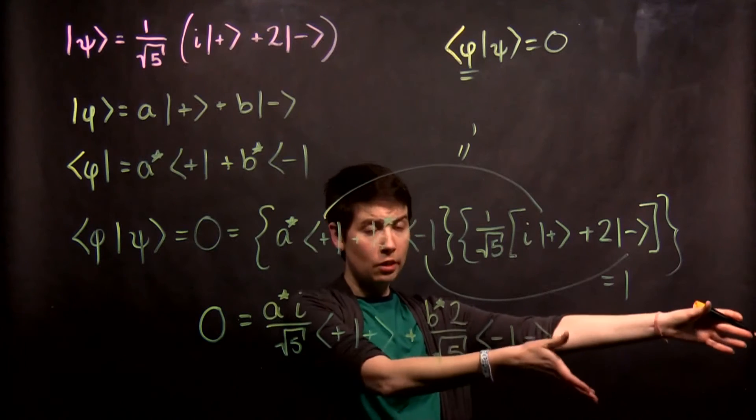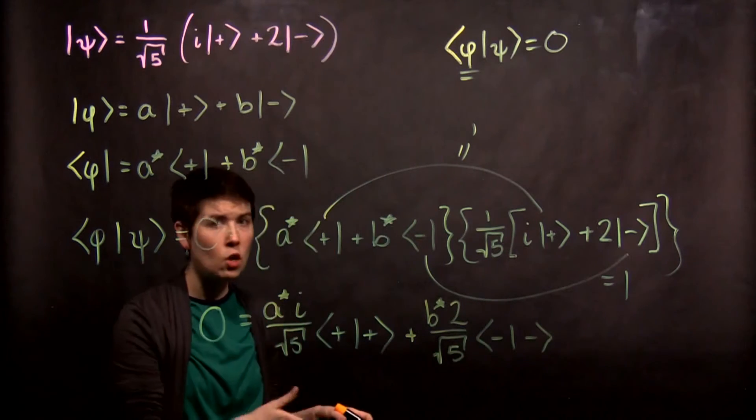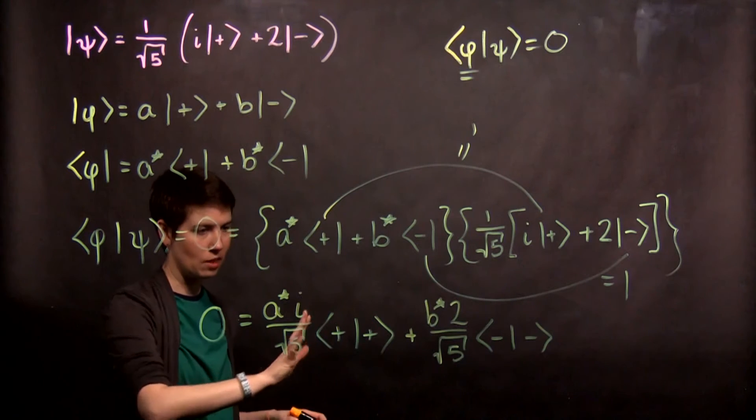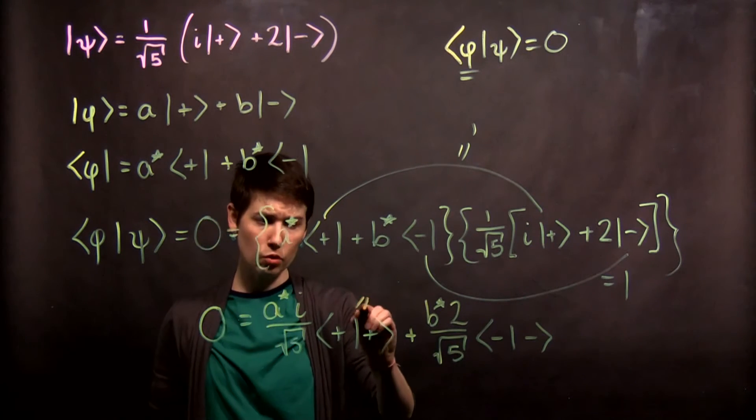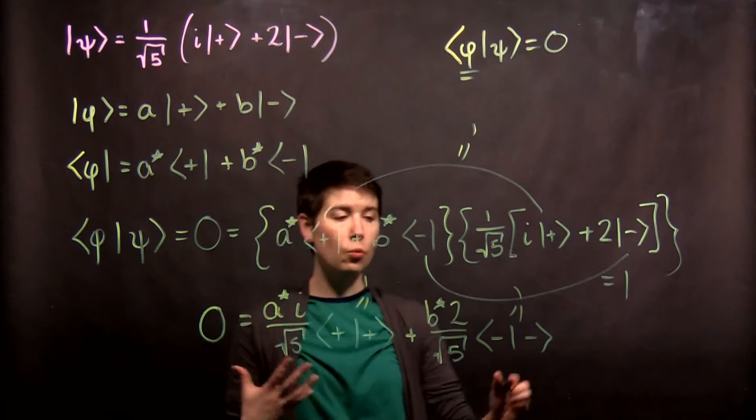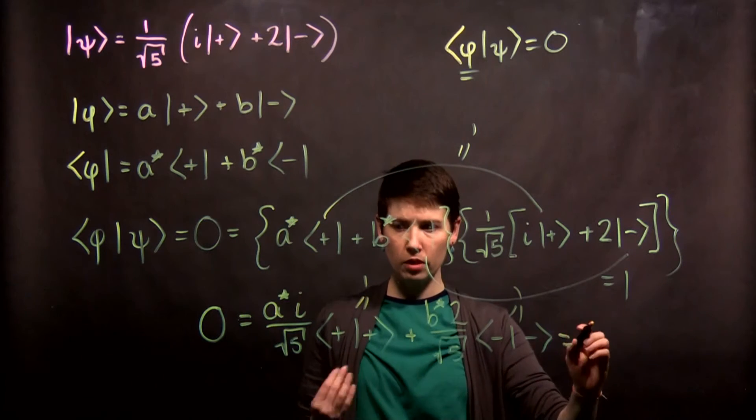So again, I encourage you when you're first practicing doing this, to write out those other two terms. My board space is so limited, I'm not going to do it. So this equals 1, this equals 1. Those other two terms were 0. So what we're left with here is,